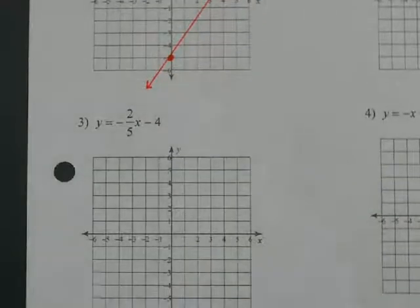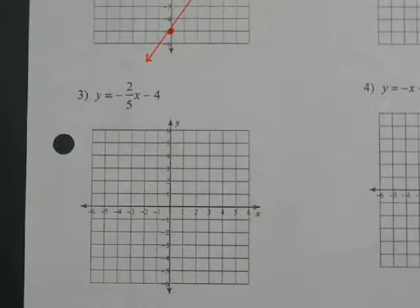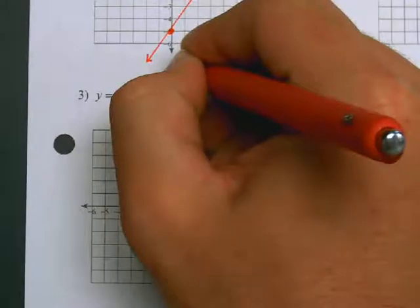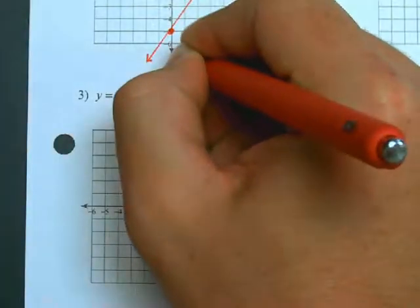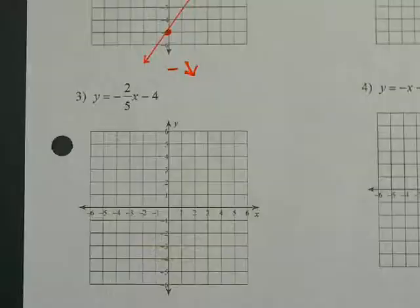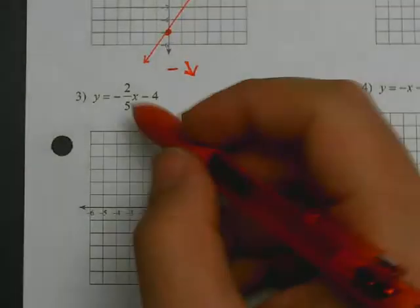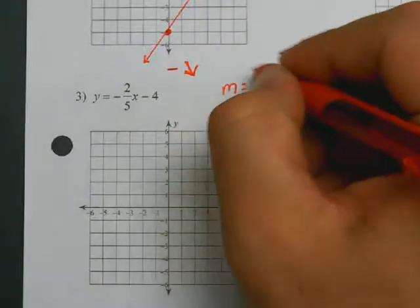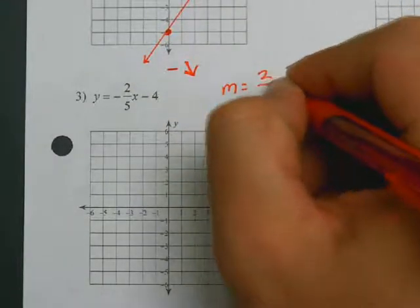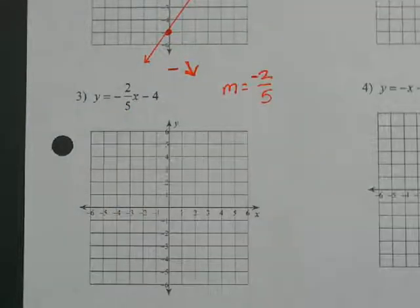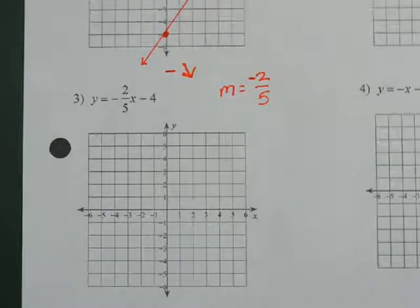Looking at number 3: first step, determine if this is positive or negative. This is negative, which means a line going down from left to right. So we're going to write our slope as a fraction — m equals 2 over 5. Now, it's a negative, so the negative always goes with the numerator. Always put your negative with the numerator.